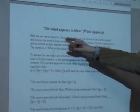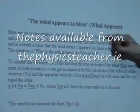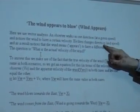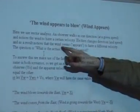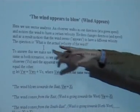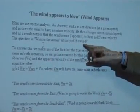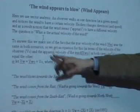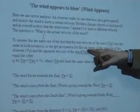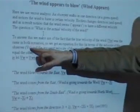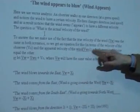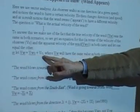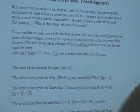So here we use vector analysis. An observer walks in one direction at a given speed, notices the wind seems to have a certain velocity. He then changes velocity or direction and speed, and as a result, notices that the wind appears to have a different velocity. The question is, what is the actual velocity of the wind? To answer this, we make use of the fact that the true velocity of the wind was the same in both scenarios, so we get an equation for this in terms of the velocity VO and the velocity VWO, and let one equal the other. So VW equals VWO plus VO. We do that in both cases, then we make them equal to each other.